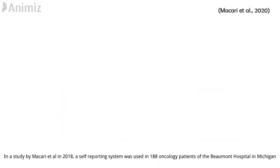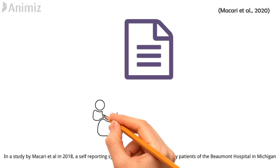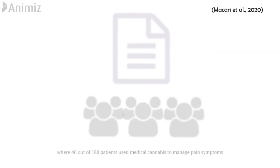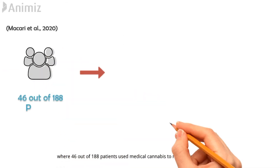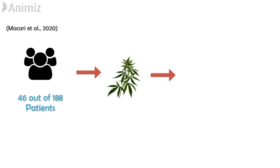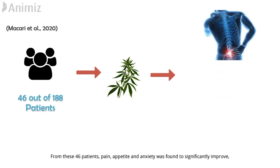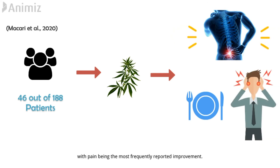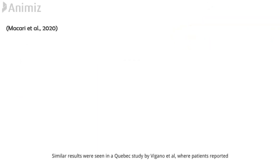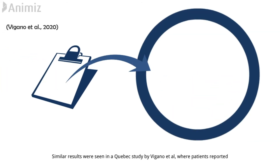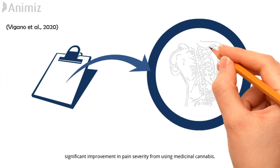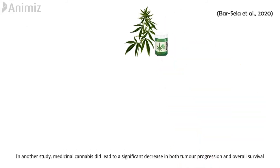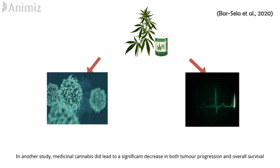In a study by Macari and colleagues in 2018, a self-reporting system was used in 188 oncology patients at Baymont Hospital in Michigan, where 46 out of 188 patients used medicinal cannabis to manage pain symptoms. From these 46 patients, pain, appetite, and anxiety were found to significantly improve, with pain being the most frequently reported improvement. Similar results were seen in a Quebec study by Vegano and colleagues, where patients reported significant improvement in pain severity from using medicinal cannabis.